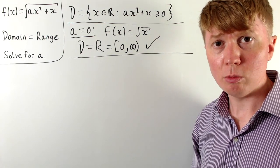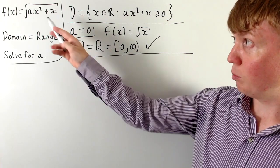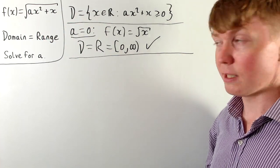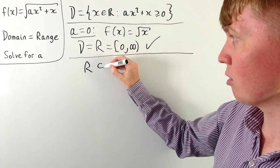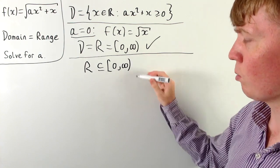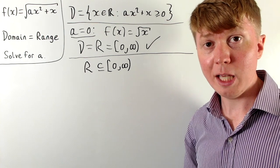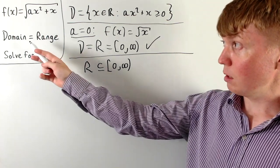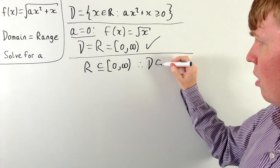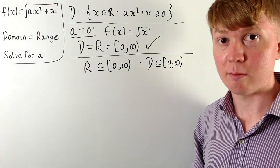One thing we can notice is that the possible outputs from the square root of something are always going to be greater than or equal to zero. So the range is going to be a subset of the interval from zero up to infinity. And since the domain must equal the range, the domain also can't contain any negative values of x.